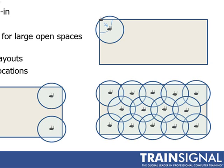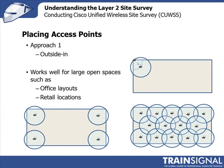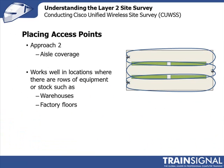In the 5 GHz band, a slightly smaller 15% overlap is sufficient. The second approach is sometimes called aisle coverage. This works really well in places like warehouses and factory floors where you have rows of equipment or shelving. In this approach, access points are placed on the wall, using a Yagi antenna to provide a very directional beam going down the aisles of the warehouse.